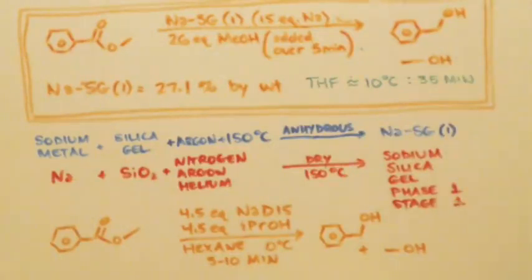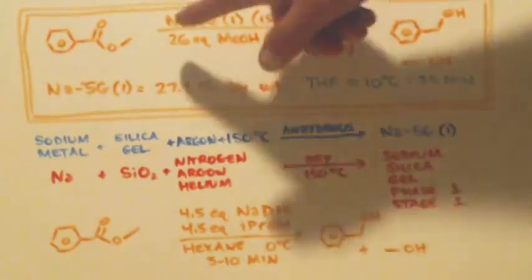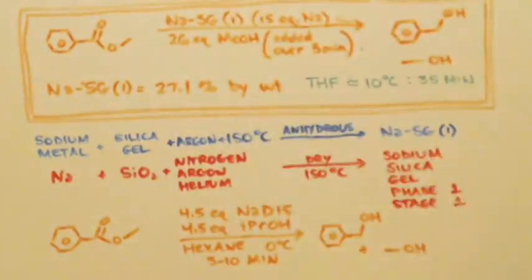They're adding it over a five-minute period, and they're using 26 equivalents of, I'm guessing, the methyl benzoate. Their solvent is THF, 10 degrees Celsius, 35 minutes. So basically, they're saying they got their methyl benzoate, and they put the sodium in, in the form of sodium SG, and then they add in the methanol over a five-minute period, and just wait. Wait 30 more minutes, stir it up, I guess. It doesn't say stir it, but I would stir it.